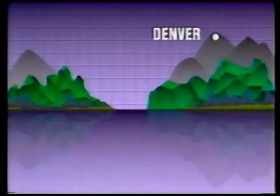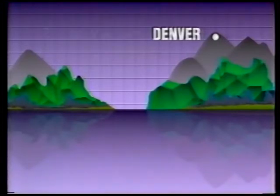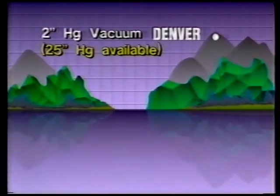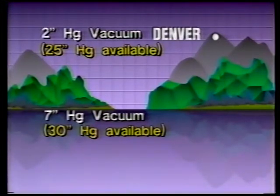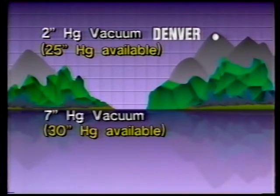If a pump is to be used at an elevation higher than sea level — say at Denver, where the atmospheric pressure is about five inches less than at sea level — the lesser atmospheric pressure must be taken into account. The reading should be approximately two inches, because we started out five inches of mercury short due to the difference in elevation.